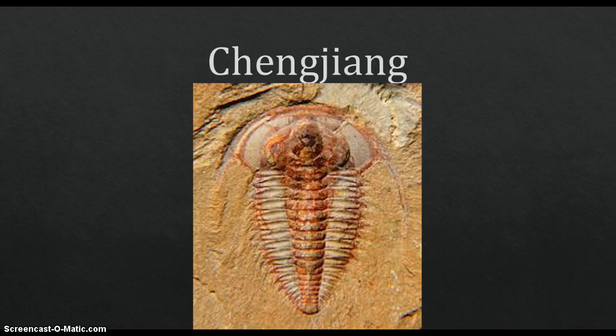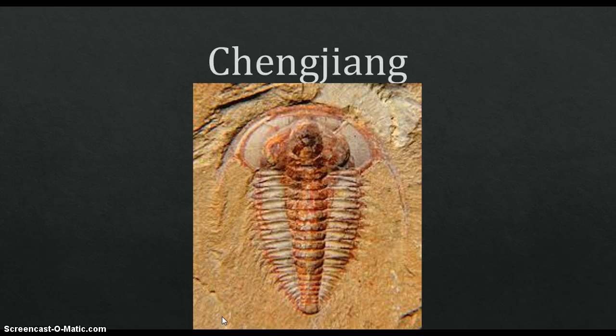Another famous one is the Chengjiang. Chengjiang is a Conservat-Lagerstätte in the Yunnan province of China, also known as the Chengjiang Biota. This is an extraordinary site where we can find the oldest Cambrian occurrence of diverse and well-preserved soft-bodied Metazoan fossils.